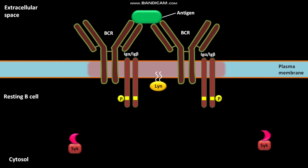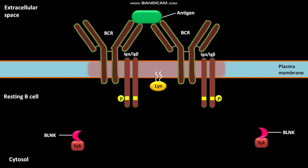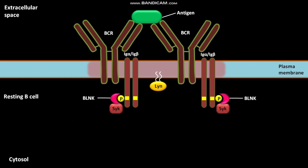The cytosol of the B cell has a protein complex containing two proteins: SYK and BLNK. Through BLNK, this protein complex then binds to the phosphorylated tyrosine amino acids of Ig-alpha and Ig-beta. This binding induces signal transduction and also receptor internalization.